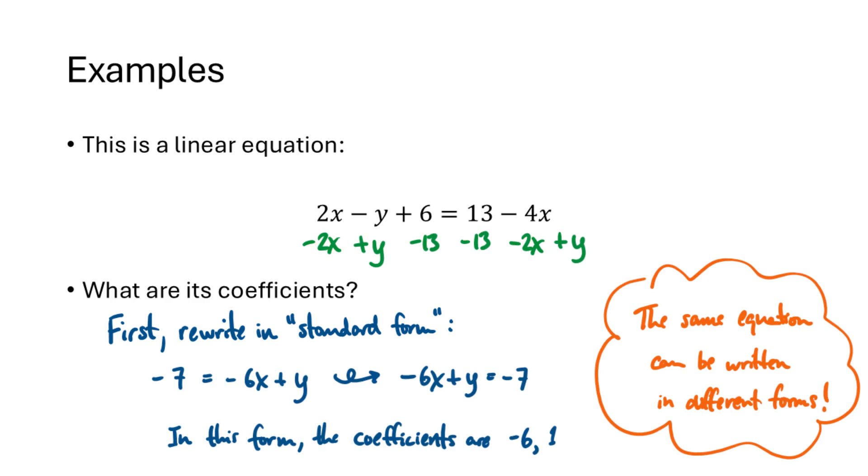But that's not the only way that we could have taken this equation and written it in standard form. Instead, we could have subtracted 2x from both sides, added y to both sides, and subtracted 13 from both sides. That gives us the equation negative 7 equals negative 6x plus y, which we can flip around and write in the form negative 6x plus y equals negative 7, and in that form the coefficients are negative 6 and 1. This example illustrates that the same equation can be written in different forms.